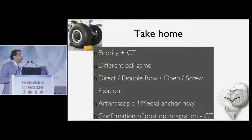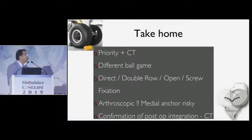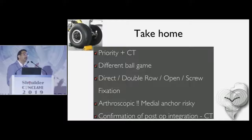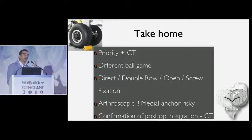In conclusion, the priority is bony Bankart fractures — don't treat them casually. They look innocent but you need to do a CT; these are a different animal completely. You could do open fixation, double row repair, or a direct repair. If doing an arthroscopic medial anchor, be very careful it's not going into the nerve or the brachial plexus. Please evaluate the results — do a CT scan at three to six months down the line.